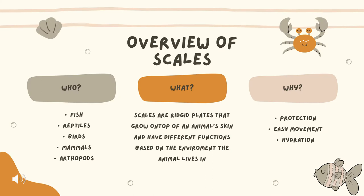So who has scales exactly? Of course we know fish and reptiles have scales all over their body, but birds actually have scales on their legs that are covered in keratin — the same substance found in our hair and nails. Mammals aren't usually associated with scales, but animals like the musky rat kangaroo and scaly-tailed squirrels have them too. Lastly, arthropods like butterflies and moths have scales that cover their wings and give them their beautiful color.